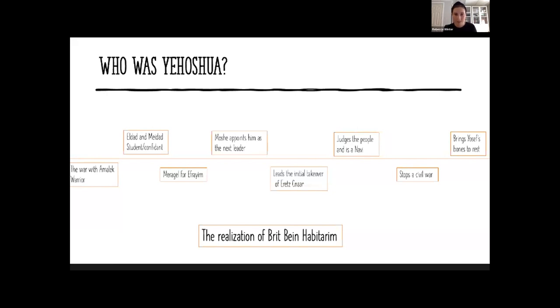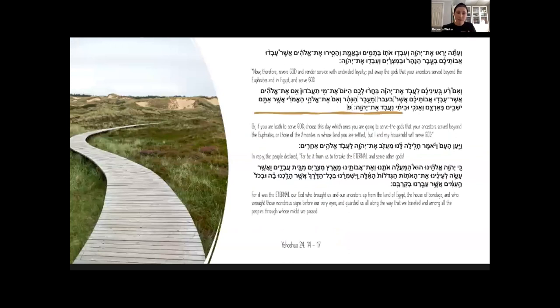Yehoshua was a slave in Egypt at the beginning of his life. He then moves through all the trials and tribulations that B'nei Yisrael went through to get to Eretz Canaan, to Eretz Yisrael. He leads them through that, and then his life, really not his life but the life of his people, comes full circle at the very end of his life when he brings Yosef's bones to rest. Of course, Yosef who brought us down to Mitzrayim. So Yehoshua's life in a way is this realization of the Brit Bein HaBetarim.